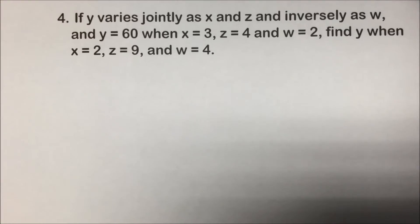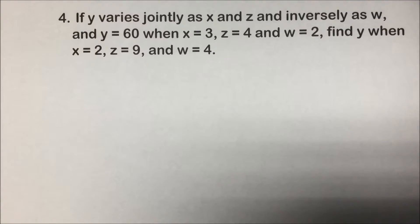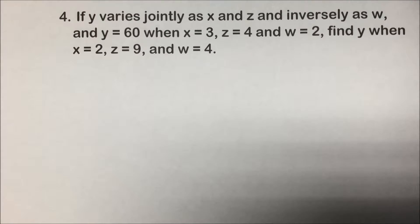Let's take a look at the Supersize Me combined variation problem. If Y varies jointly as X and Z and inversely as W, and Y is 60 when X is 3, Z is 4, and W is 2, find Y when X is 2, Z is 9, and W is 4.